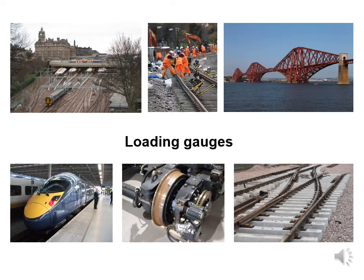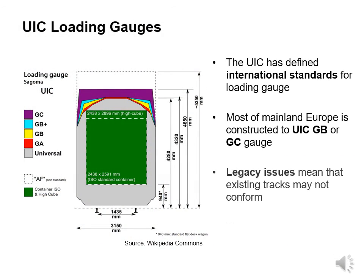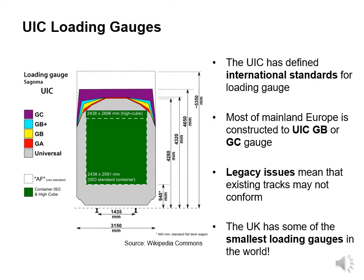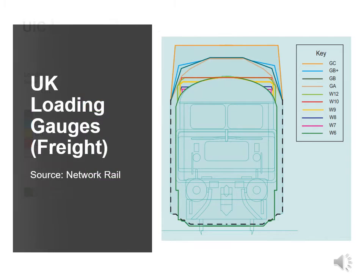Let's now have a look at loading gauges. The UIC has defined international standards for loading gauge. Most of mainland Europe is constructed to UIC GB or GC gauge, though legacy issues mean that existing tracks may not conform. The UK has some of the smallest loading gauges in the world. Great Britain has, in general, the most restrictive loading gauge relative to track gauge in the world. This is a legacy of the British Railway Network being the world's oldest and having been built by a plethora of different private companies, each with different standards for the width and height of trains.